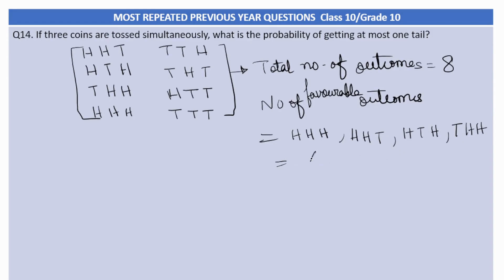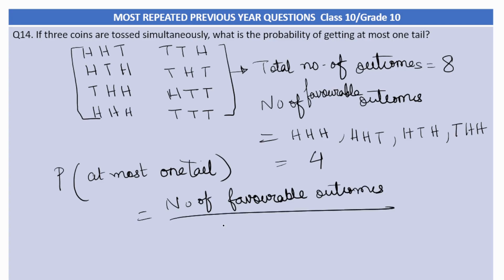One, two, three and four. This set has four, so four favorable outcomes are there. So probability of getting at most one tail will be 4 by 8, which is actually half. So there are 50% chances of getting at most one tail. So probability is like that when three coins are tossed simultaneously.